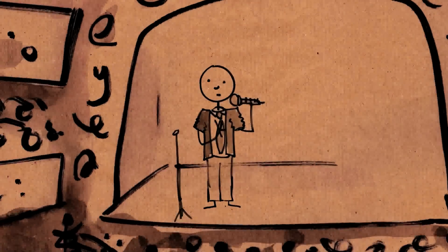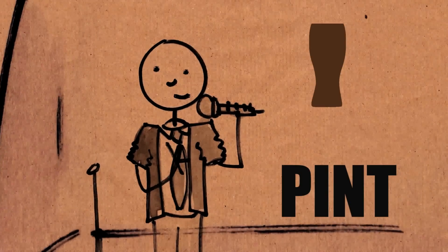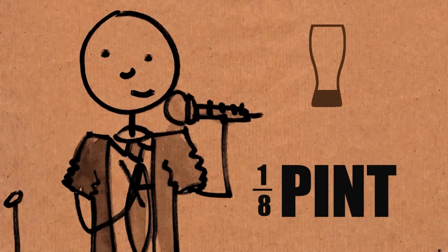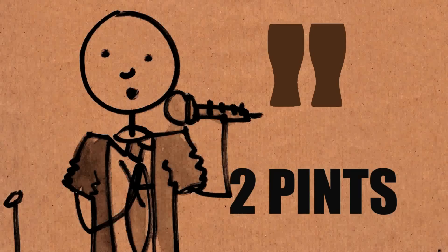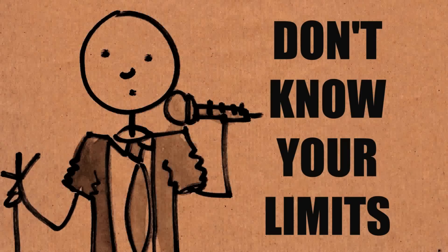So an infinite number of mathematicians walk into a bar. The first one orders a pint. The second one, half a pint. Then a quarter. Then an eighth. Eventually the barman hands over two pints and says, you mathematicians, you just don't know your limits.